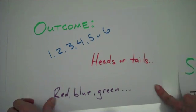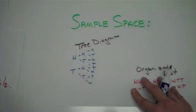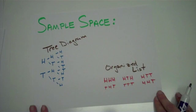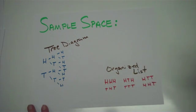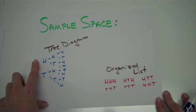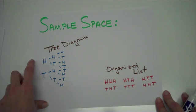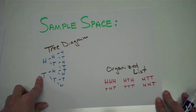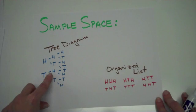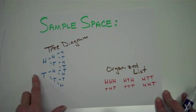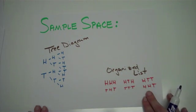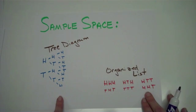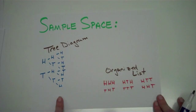When you figure out what those outcomes are, you're going to want to have something called a sample space. You need to recognize it when you see it. A sample space is basically an organization of all your possible outcomes. One of them would be a tree diagram, where in this example you're tossing a coin. In your first toss you can get heads or tails, and then if you got tails the first time, you could get heads or tails the second time, and so on. The other way is an organized list, which is basically the same thing as the tree diagram, just written a different way. This is a way for you to see all of the possible outcomes so that you can figure out the probability.